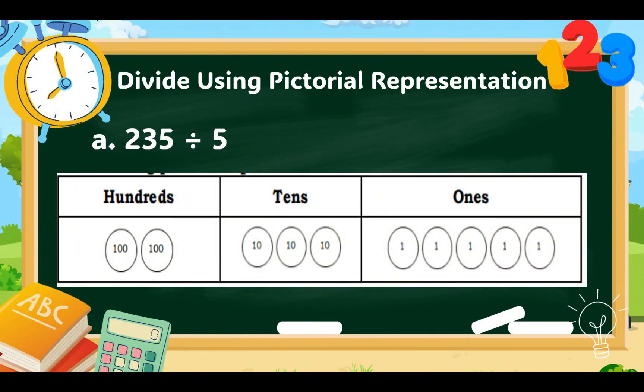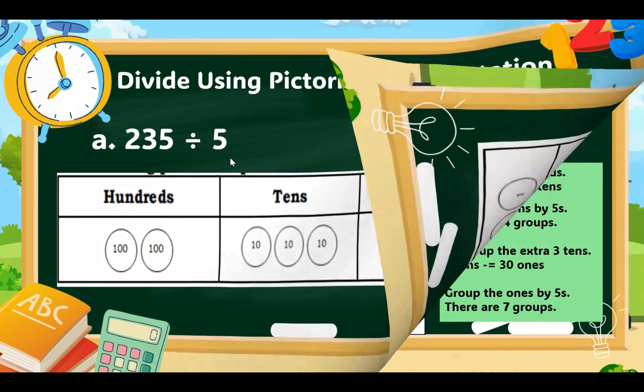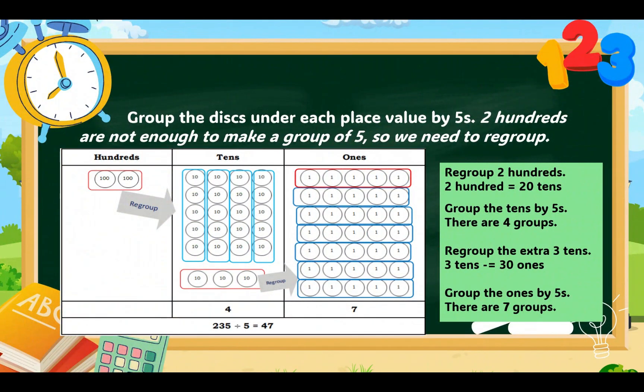Now, let's divide using pictorial representation. Letter A, 235 divided by 5. Notice that we have 2 hundreds and 3 tens and 5 ones in 235. Now, let's divide that into 5. We have to group the disks under each place value by 5. 2 hundreds are not enough to make a group of 5. So, we need to regroup.